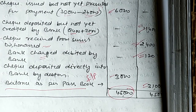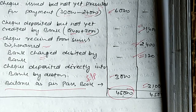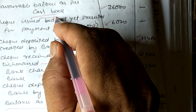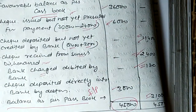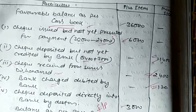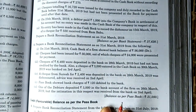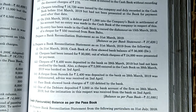So this was our lecture based on question number 7 and 8 — favorable balance as per cash book. The total questions were covered over this topic. The next topic is credit balance as per passbook, which we will do in our next lecture. Thank you so much.